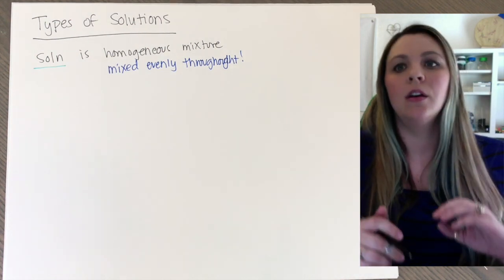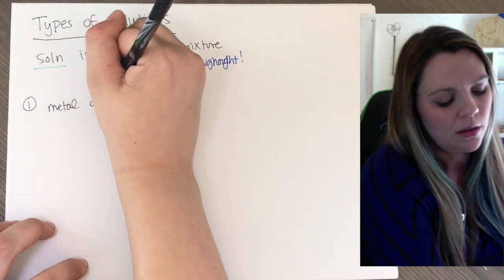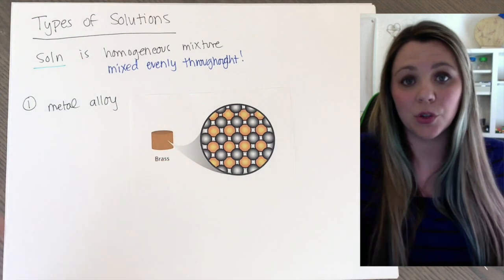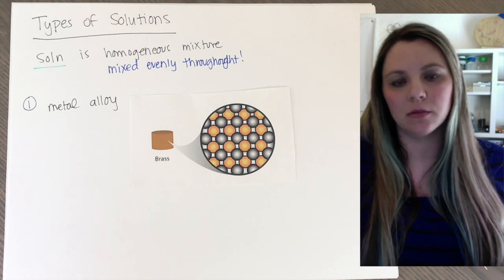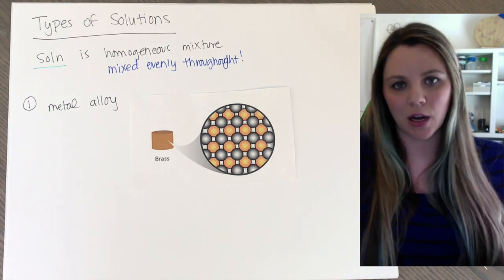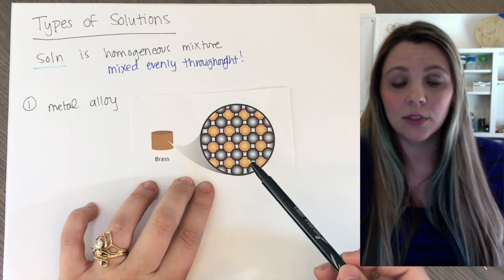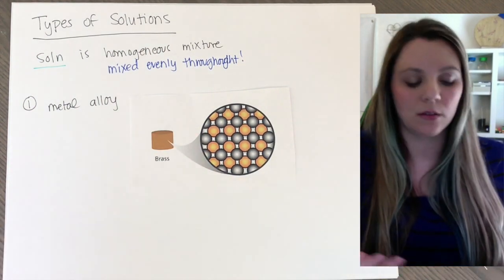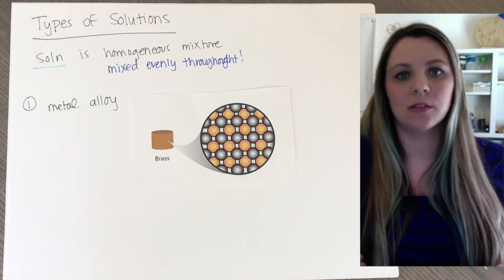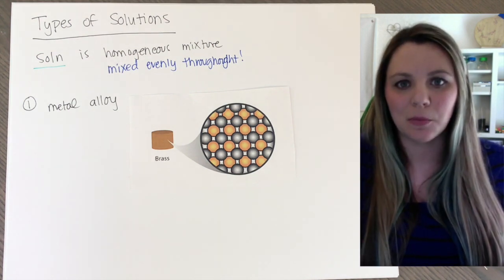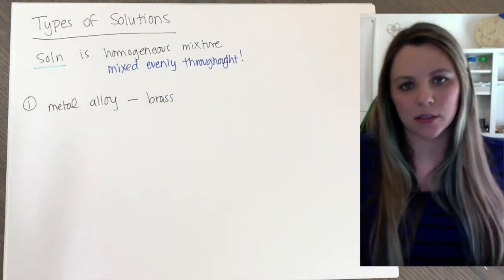There are different types of solutions. I can have a metal alloy, where I have two different types of metals mixed together. The most common example that we talk about typically in high school is brass. Brass is zinc and copper mixed together. You can see in this lovely, beautiful picture, you've got zinc and copper mixed together to make brass. I have a mixture, it is homogeneous, it's mixed the same throughout, and that's how you get all of your brass instruments that hopefully someone in this classroom plays in band.